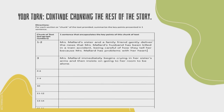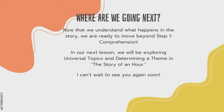So where we've left off so far: Mrs. Mallard's sister and a family friend gently deliver the news that her husband has been killed in a train accident, being careful of how they tell her because Mrs. Mallard has problems with her heart. Mrs. Mallard immediately begins crying in her sister's arms and then insists on going to her room to be alone. Continuing from there, completing the rest of what happens in this story is your task. I'll give you time before we have Lesson 3 to get the rest of what happens in this text so that we can build on top of it.